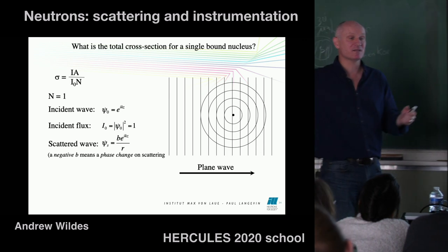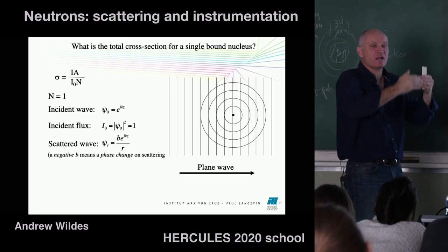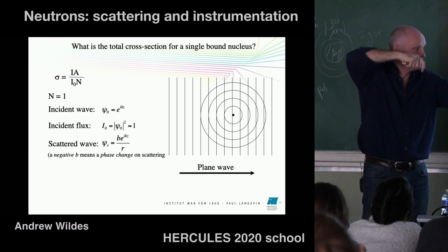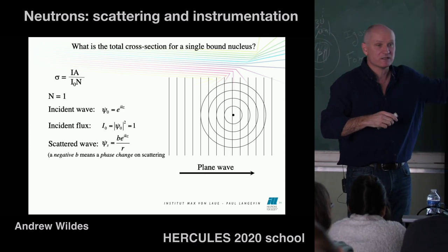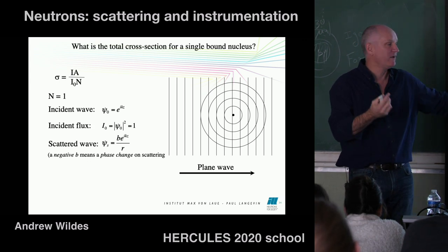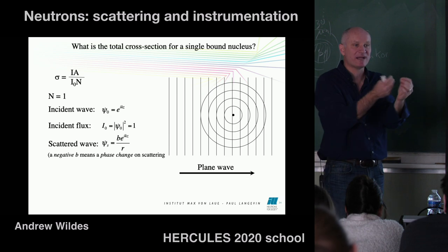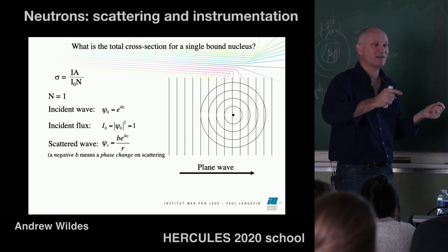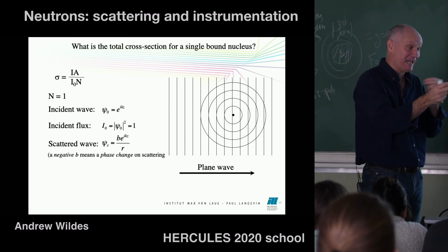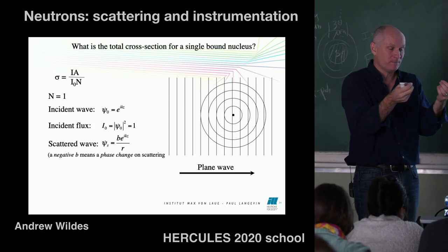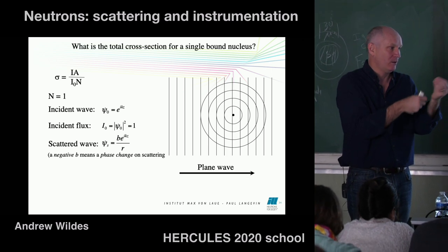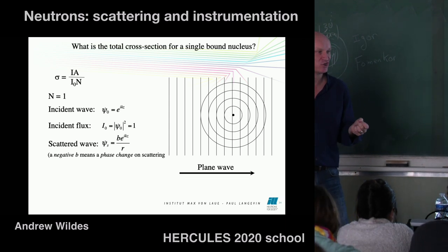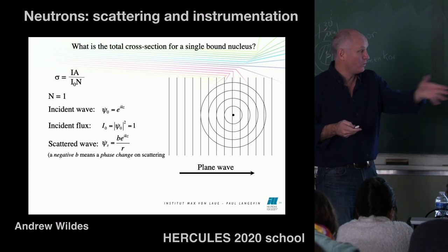A negative b means the phase of the scattered wave is flipped relative to the incident wave — equivalently, there's a repulsive rather than attractive force between the neutron and nucleus. Why this happens for certain nuclei is not fully understood. When computing the total cross-section, the sign drops out because you take the modulus squared: |−b|² = b². Someone asks: can b be complex? For the nuclear part, no — it's a scalar, positive or negative. For the magnetic part, it's different.